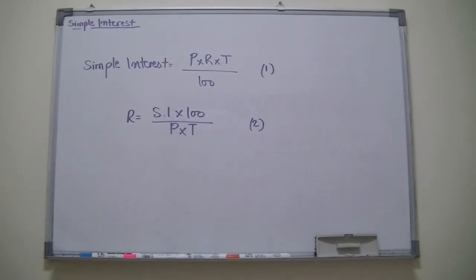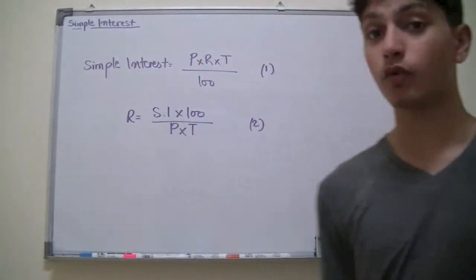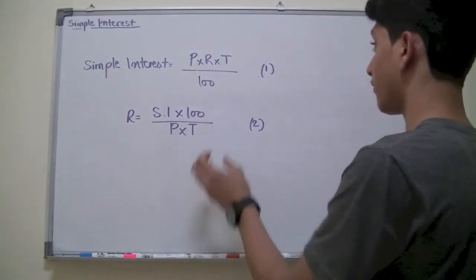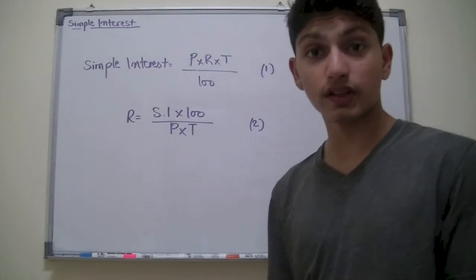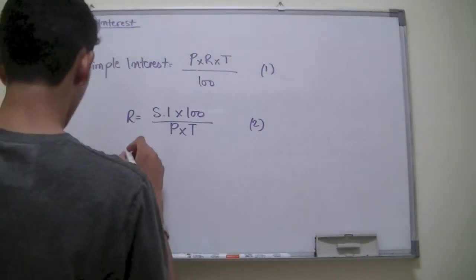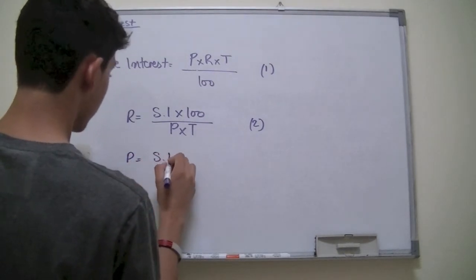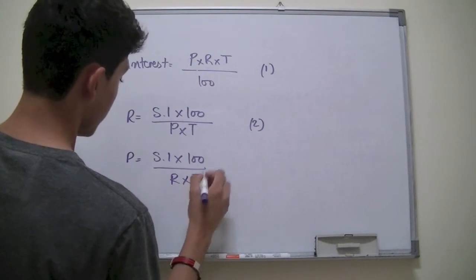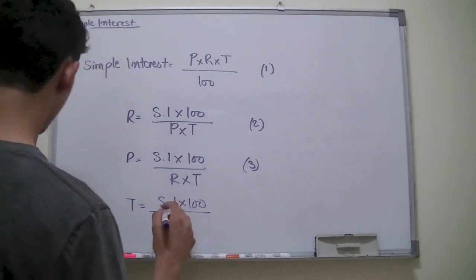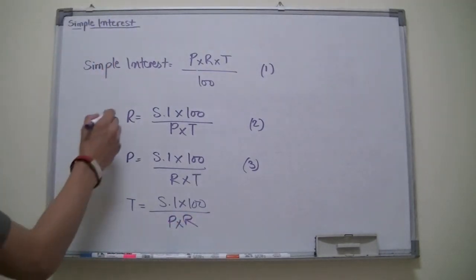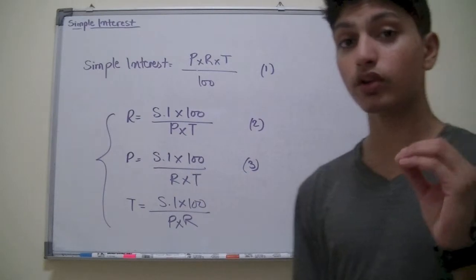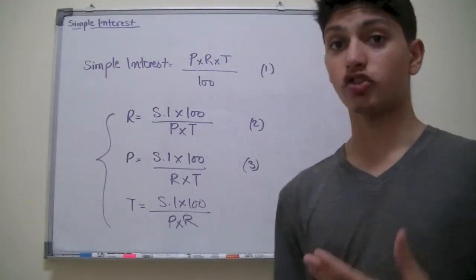We can find each formula in the perspective of R, then in the perspective of P, and then in the perspective of T. Since we know we can do that, just for the heck of it, we can write it because in some later uses it might be helpful. P would be equal to simple interest times 100 over R times T. This is the third derived formula. Then we have T which equals simple interest times 100 over P times R.